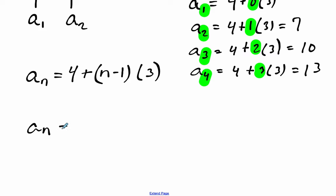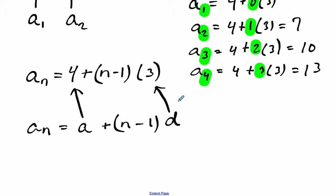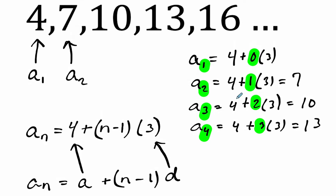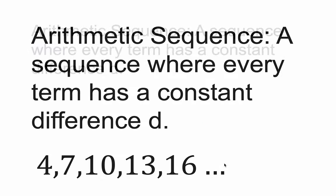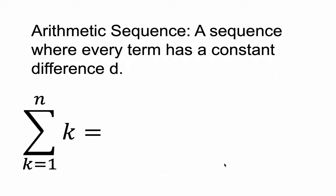In general, an arithmetic sequence starts with A — the first term — plus (n−1) times the common difference D. This is the first term, this is the common difference. Now we're going to explore what happens when we look at a series involving an arithmetic sequence — in other words, when we add up the terms of an arithmetic sequence. The summation from k=1 to n of the arithmetic sequence tells us to add up all the terms from the first to the nth.